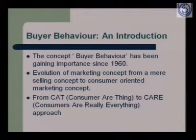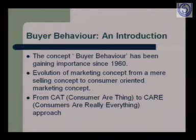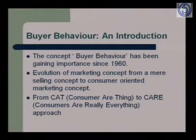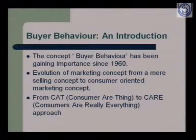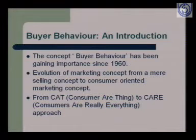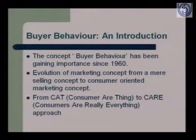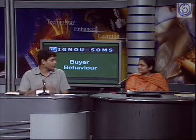In today's context we have moved our approach from CAT to CARE. CAT is an acronym: C stands for Consumer, A and R, T for Thing. Earlier, we used to think there are consumers and we have some product and we can sell it to them. But now the whole scenario has changed. We have moved from CAT to CARE: C for Consumers, A, R for Really, and E for Everything. What Mahatma Gandhi quoted long back — that we have to give more emphasis to customers rather than ignoring them.